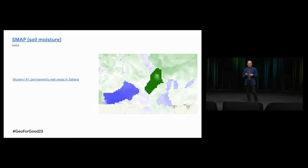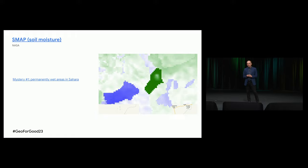SMAP — soil moisture from NASA, one of the most requested datasets, and we're happy to have it now. We prepared this dataset with help from NASA, who also wrote tutorials. Once we had it, I looked for outliers and went to the Sahara, where I found some green areas that were suspiciously too wet. I went to Sentinel-2 and Google Maps imagery — there's no obvious oasis — but there are several spots like this in the Sahara. Maybe there are data anomalies or maybe it's real. If any soil scientists are here, I'd be curious to know why.